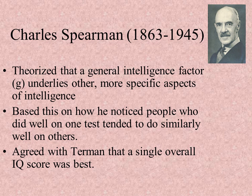Spearman was looking at intelligence more as an academic type of intelligence. When we get to Sternberg and Gardner, you'll see why believing in Spearman's intelligence means buying into the idea that intelligence is more of an academic skill. He believed, along with Terman, that there was one good IQ score that would basically tell you someone's abilities.